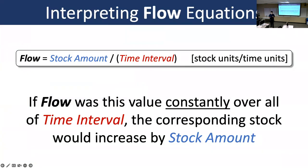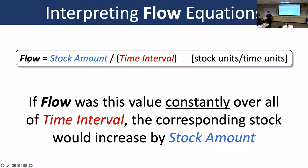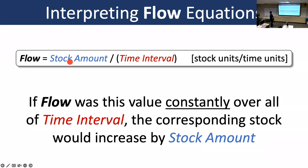Throughout the rest of the semester we'll look at dynamical systems models written in terms of stocks and flows, where all system information is built into the flow expression. We need to know how to interpret these flows so we can build them and read others' work. Flows generally can be factored into two parts: some stock amount divided by some time interval. Flows will always be in units of the stock's units divided by the time units — if the stock is in centimeters, the flow will be centimeters per second.